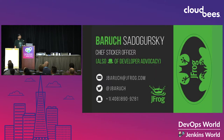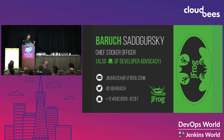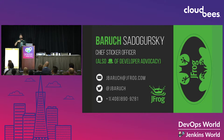My name is Baruch, and I'm Chief Sticker Officer at JFrog. We have a booth across this wall with stickers you should grab. We also have T-shirts saying 'Updates are Coming' - those represent the continuous updates we're talking about. Follow me on Twitter at JBaruch, which is on every slide to make it easy.